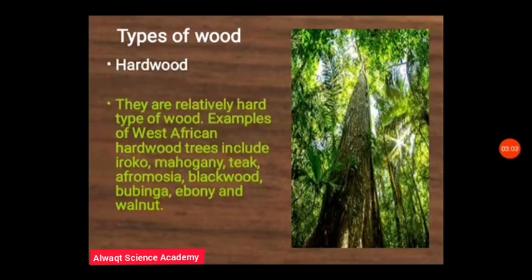Hardwoods are relatively hard types of wood compared to softwood — they are harder. They can be found in different parts of the world. West Africa is blessed with different varieties of hardwood trees. Examples of hardwood trees in West Africa include the famous Iroko tree, mahogany, teak, afromosia, blackwood, bubinga, walnut, and ebony.